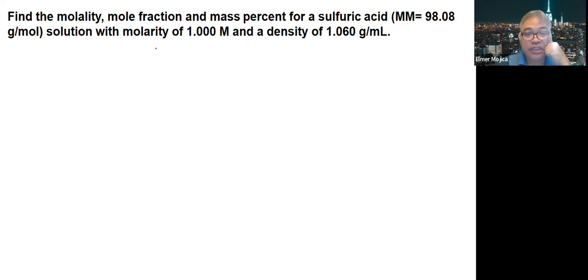So we can start maybe in doing the mass percentage first. If you're going to look at it, we have a density that is equals to 1.060 grams per mL. So if we have a liter, we can multiply it with 1,000 mL, giving us 1,060 grams.